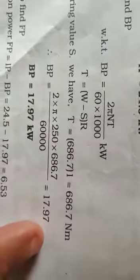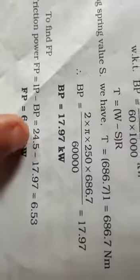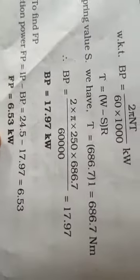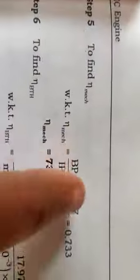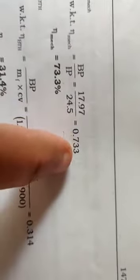To find friction power: friction power equals IP minus BP, 24.5 minus 17.97 equals 6.53 kilowatts. To find mechanical efficiency: mechanical efficiency equals BP by IP, so BP by IP you get 0.733, that is 73.3%.